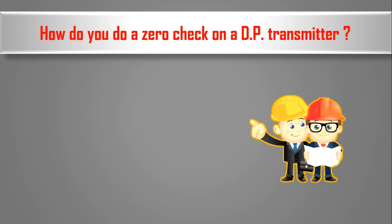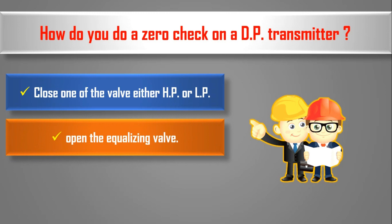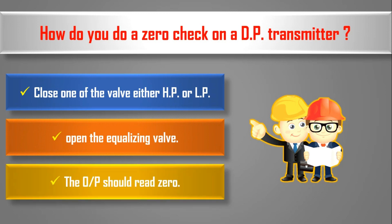Now we will discuss how to do a zero check on a DP transmitter. Step 1: close either the high pressure side valve or the low pressure side valve in the manifold. Step 2: open the equalizing valve. The output should then read zero.